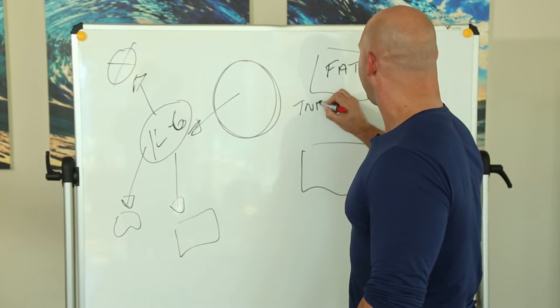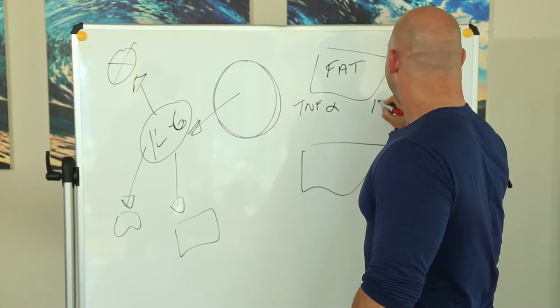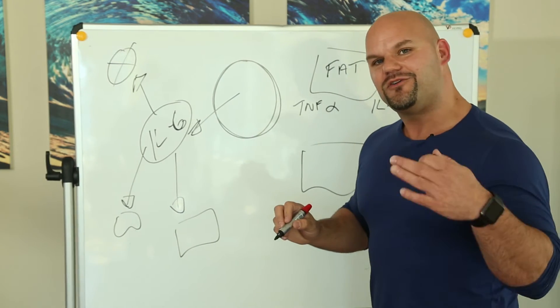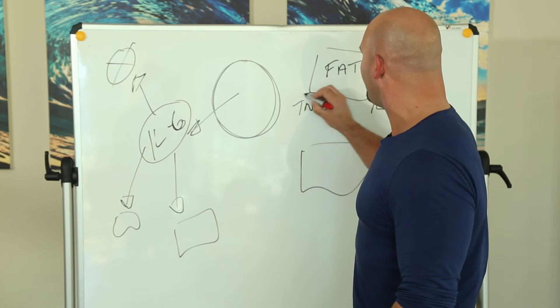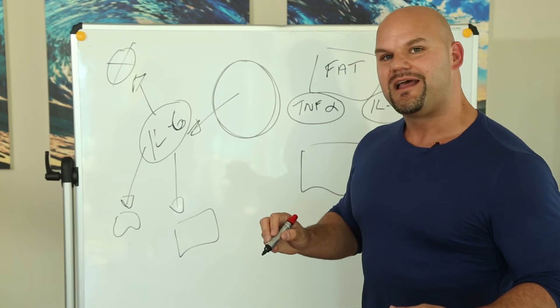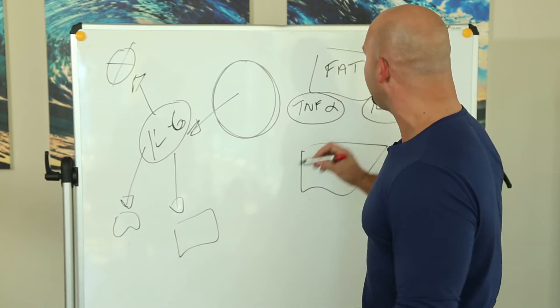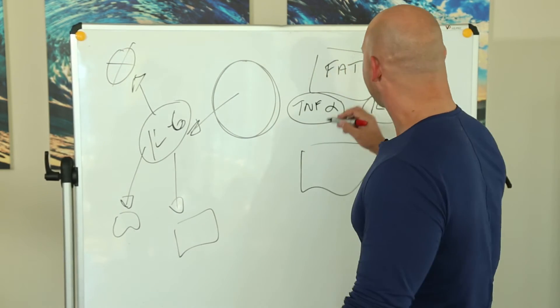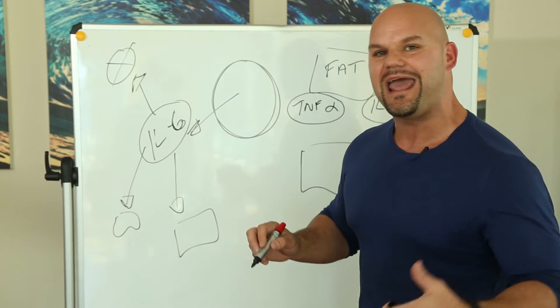Compounds like TNF alpha and IL-1 beta. Now you don't need to know the names of those compounds, but what you want to know is that these are inflammatory compounds. They cause pain in the body. They increase your risk of cardiovascular disease. They have many negative effects on aging.